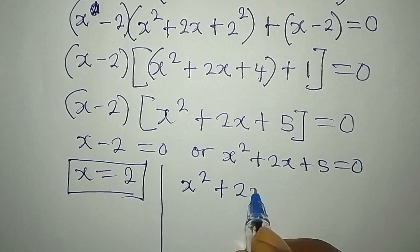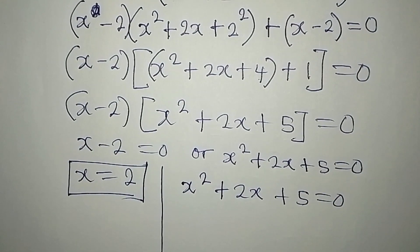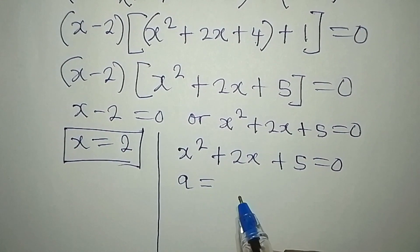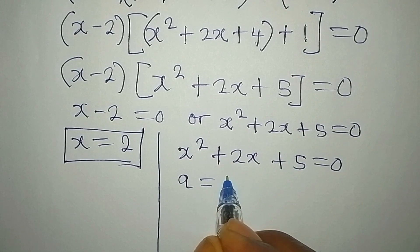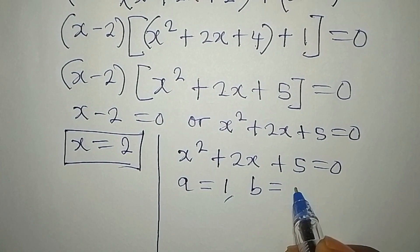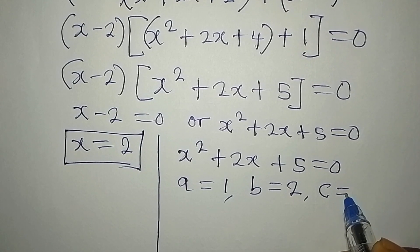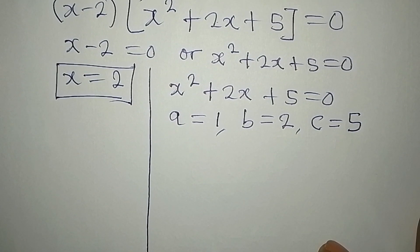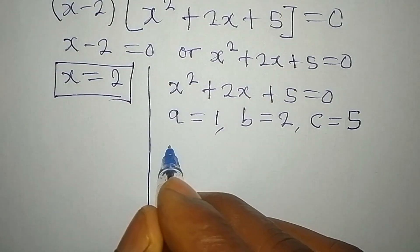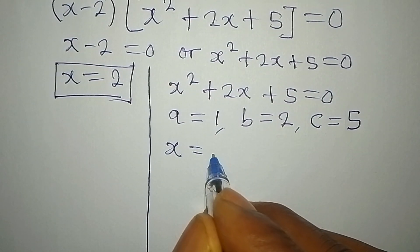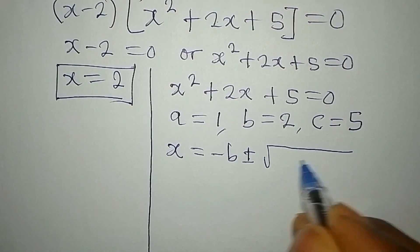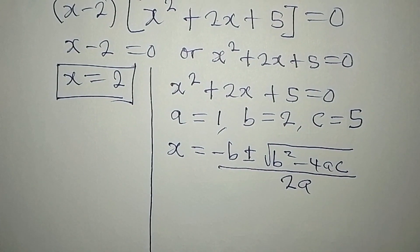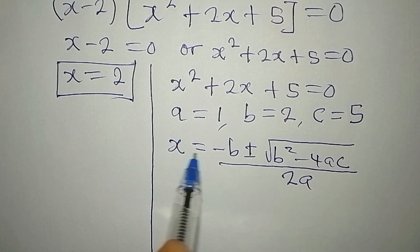x squared plus 2x plus 5 equals zero, and we're going to use the quadratic formula. We identify a, b, and c: a is the coefficient of x squared, which is 1; b is the coefficient of x, which is 2; and c is the constant, which is 5. The quadratic formula is: x equals negative b plus or minus square root of b squared minus 4ac, all over 2a.